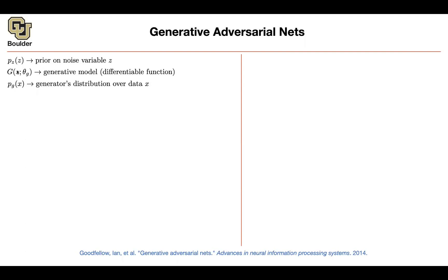We want to train the parameters of this generative process — this neural network — somehow. You don't want to use your likelihood, because it's intractable, like before. You don't want to do variational inference either. So the idea here was very simple: you give me an image — it is fake, coming out of the generator — and you give me some images generated from the real data distribution. Some images are fake, some images are real.